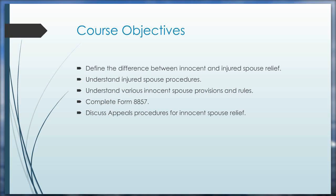Our course objectives today are to define the difference between innocent and injured spouse relief — a very commonly confused topic, even among practitioners. We're also going to look at injured spouse procedures, various innocent spouse provisions and rules including some things you don't commonly hear about. We'll go in-depth on Form 8857, and then discuss appeals procedures for innocent spouse relief.